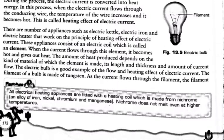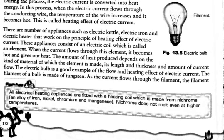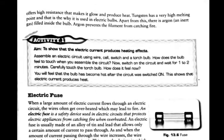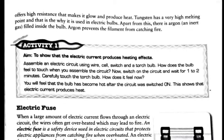The electric bulb is a very good and common example to show the production of heat while current flows through the filament of the bulb. As you can see in figure 13.5, the filament of the electric bulb is made up of tungsten. As current flows through the filament, it offers high resistance that makes it glow and produces heat.